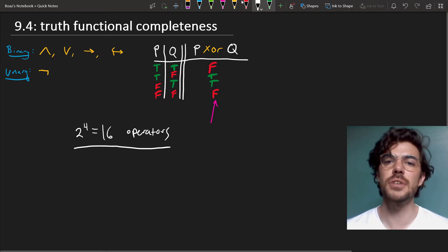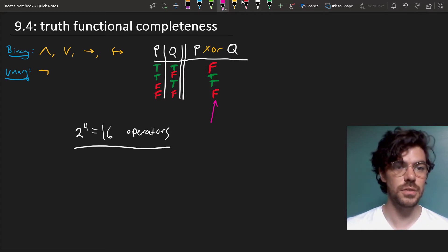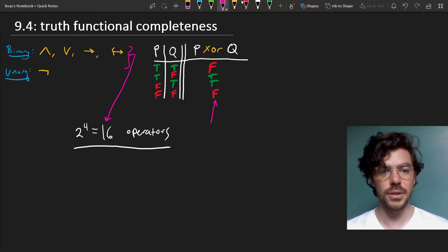But actually, there's a more interesting and elegant way of showing that our truth-functional operators are complete in the sense that we can use these five to construct all 16 of these. Here's how.